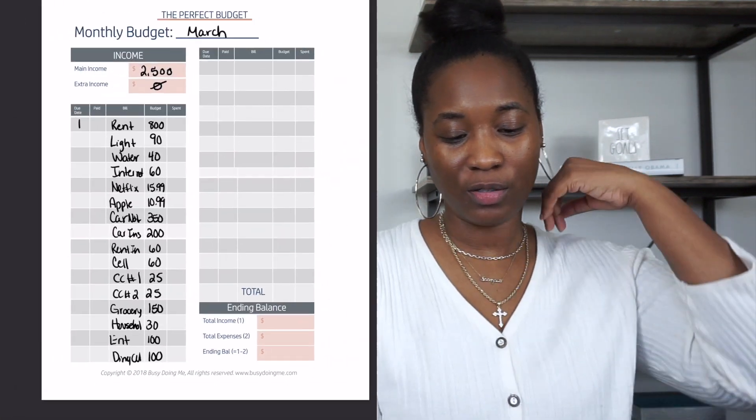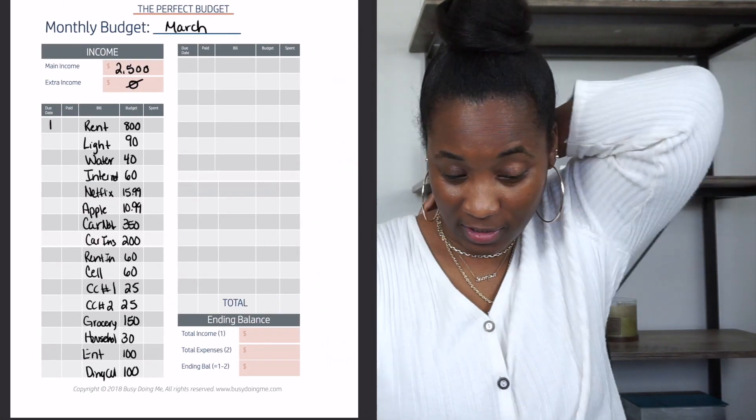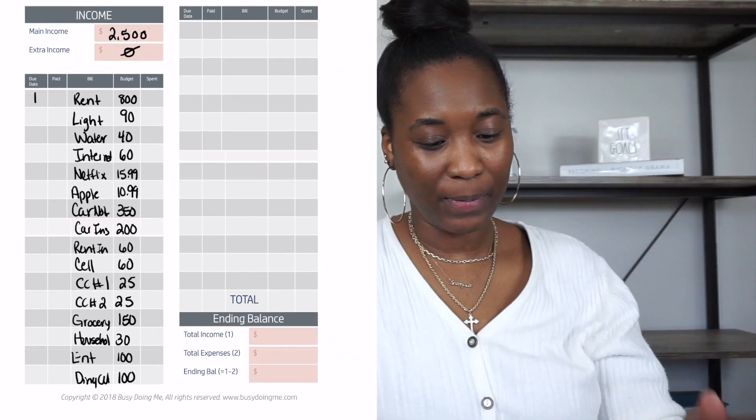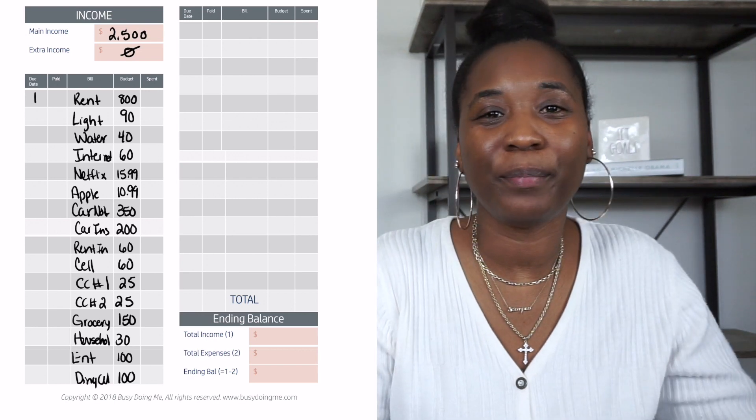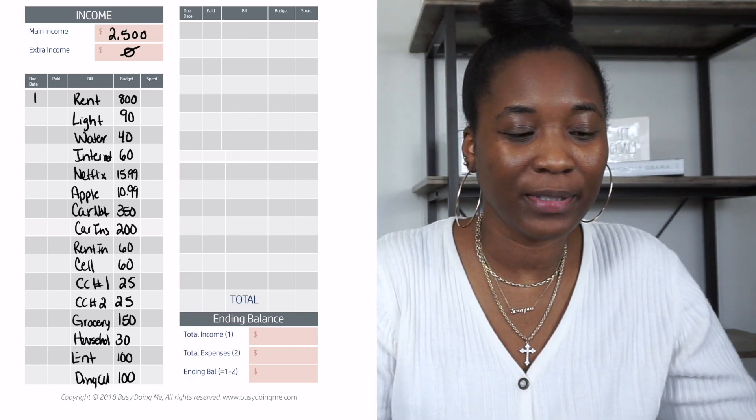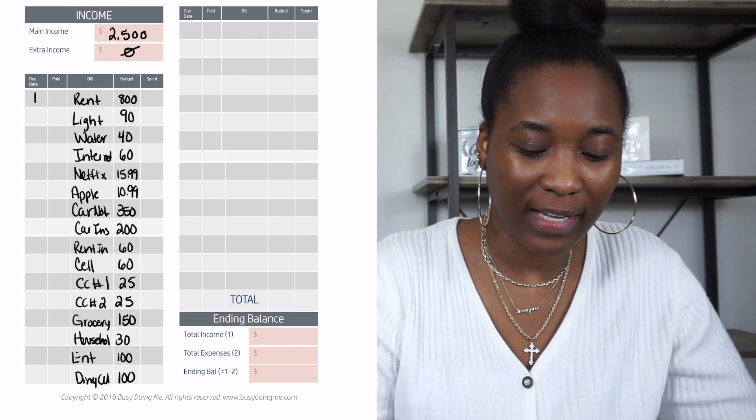Then he has what I would consider cash envelopes — his household items. Groceries are $150 a month, household items like toilet tissue are $30, entertainment is $100, and dining out is also $100. Those are Jesse's monthly expenses, and let's put in some random due dates.